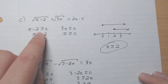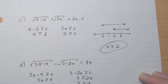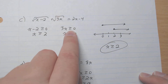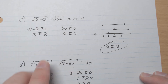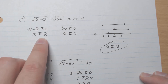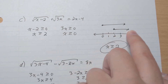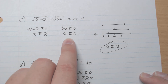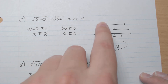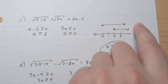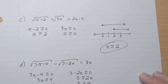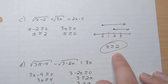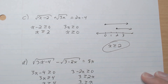For part d, we have two conditions: x minus 2 must be greater or equal to 0, and 3x must be greater or equal to 0. Adding 2 to both sides gives x greater or equal to 2, and dividing gives x greater or equal to 0. What's in common is x greater or equal to 2.